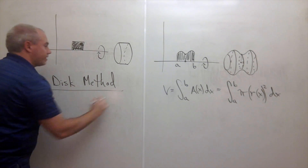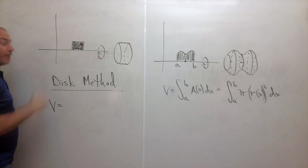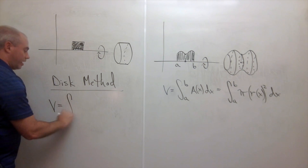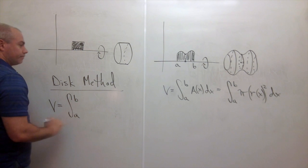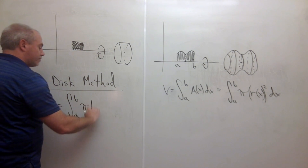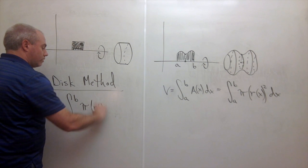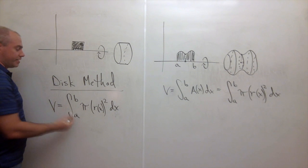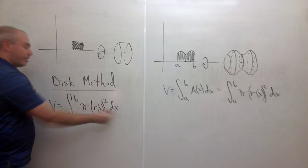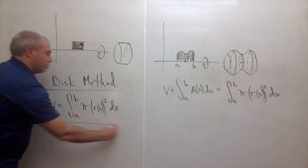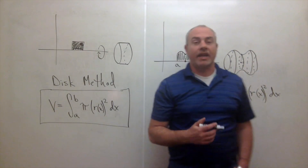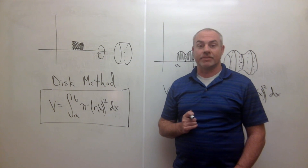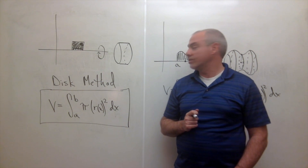This is called the disk method. The disk method says that the volume of a shape where you spin it and your cross-sections are disks is equal to the integral from a to b of π times R(x) squared dx — in other words, the integral from a to b of π r² dx. I'll show you several examples of the disk method in problems you can watch later.